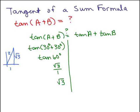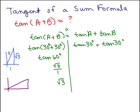So the tangent of 30 degrees plus 30 degrees equals square root of 3. Is that the same as the tangent of 30 degrees plus the tangent of 30 degrees? Let's draw a picture for 30 degrees: sides square root of 3, 1, and 2 — so the tangent of 30 degrees is 1 over square root of 3. That means we have 1 over square root of 3 plus 1 over square root of 3, which gives us 2 over square root of 3.